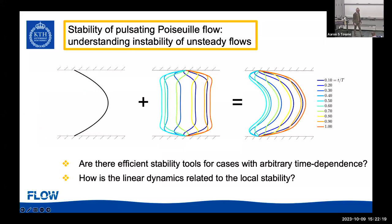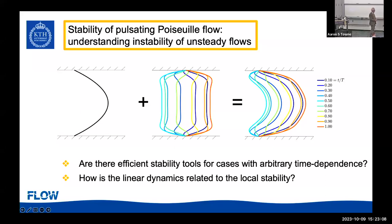For the stability of pulsating Poiseuille flow, we take the regular Poiseuille profile, add an oscillating Stokes layer, and together they form a nonlinear solution of the Navier-Stokes equations. The flow is between two walls, and instead of just a parabolic profile, once you oscillate the flow rate, the profiles change over one period. We're going to see whether there are efficient stability tools for this and how the linear dynamics relates to the local stability — meaning doing an eigenvalue stability of these individual snapshots.